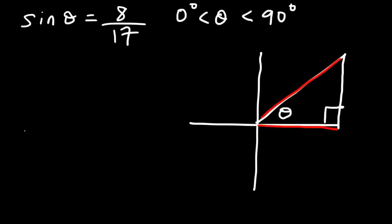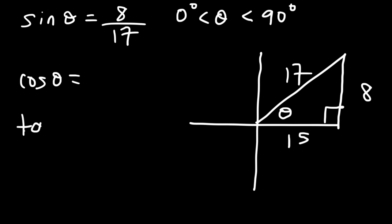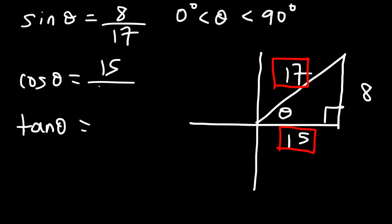We place angle theta between the x-axis and the hypotenuse. Sine = opposite/hypotenuse, so the hypotenuse is 17 and the opposite side is 8. This is the 8-15-17 right triangle, so the missing side is 15. Therefore cosine theta = adjacent/hypotenuse = 15/17, and tangent theta = opposite/adjacent = 8/15.